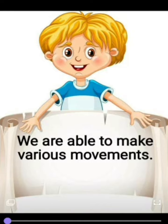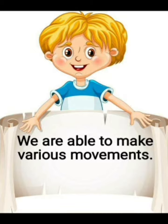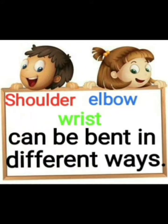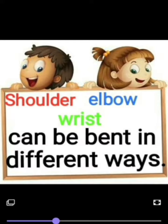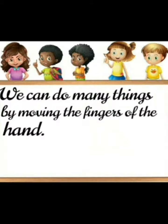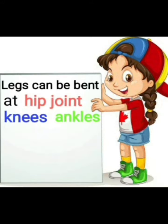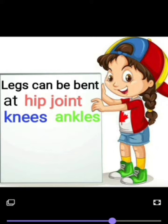Children, let's do a quick revision of what we have learned today. We are able to make various movements. The neck can be bent forward and backward. The shoulder, elbow, and wrist can be bent in different ways. We can do many things by moving the fingers of the hand. The torso is bent at the waist. Legs can be bent at the hip joint, knees, and ankles.